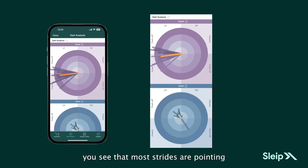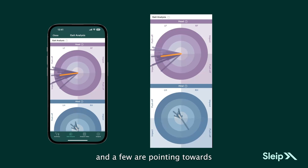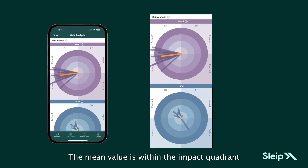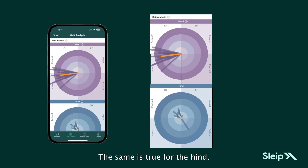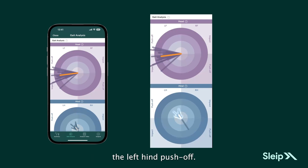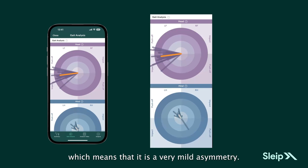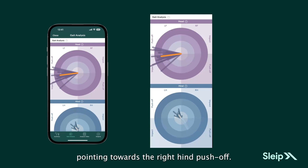In this case, you see that most strides are pointing towards left front impact and a few are pointing towards the left front push-off. The mean value is within the impact quadrant, which means a moderate asymmetry. For this horse, most strides are pointing towards the left hind push-off — the mean is gray, which means it is a very mild asymmetry. You also see an outlier pointing towards the right hind push-off.